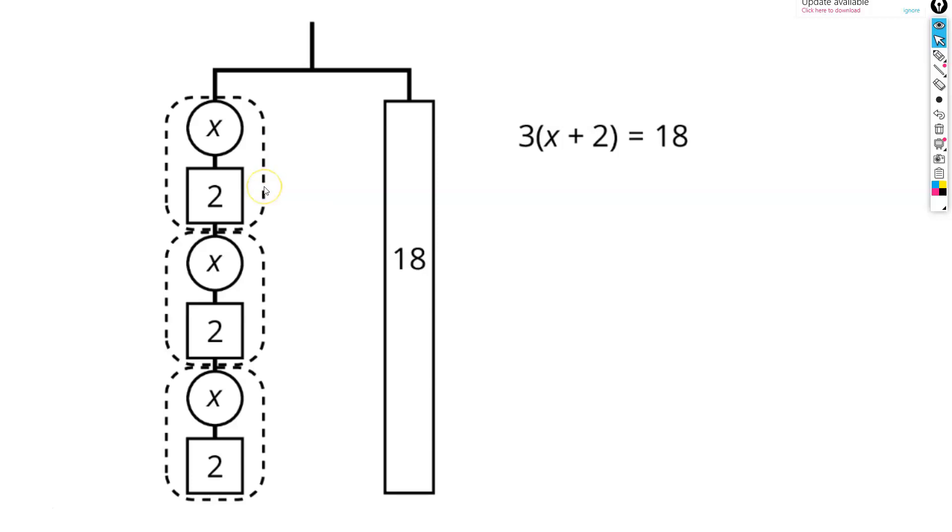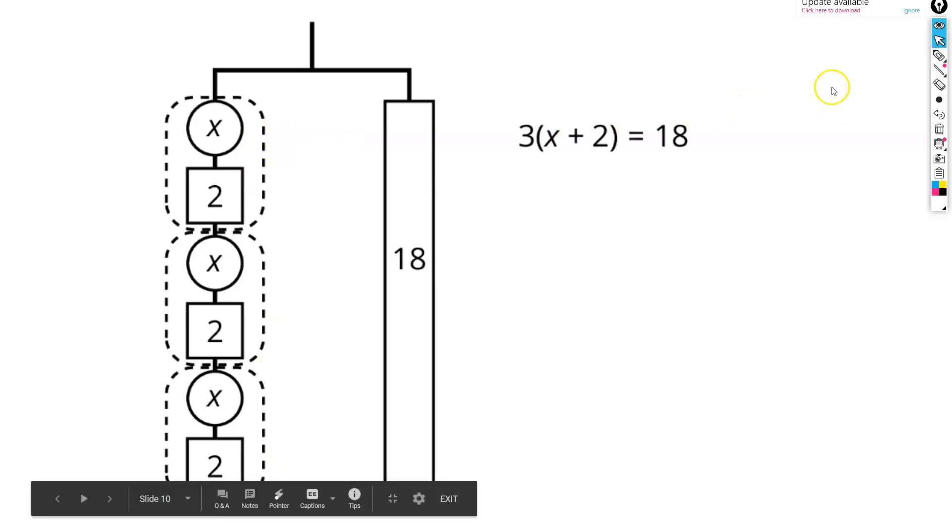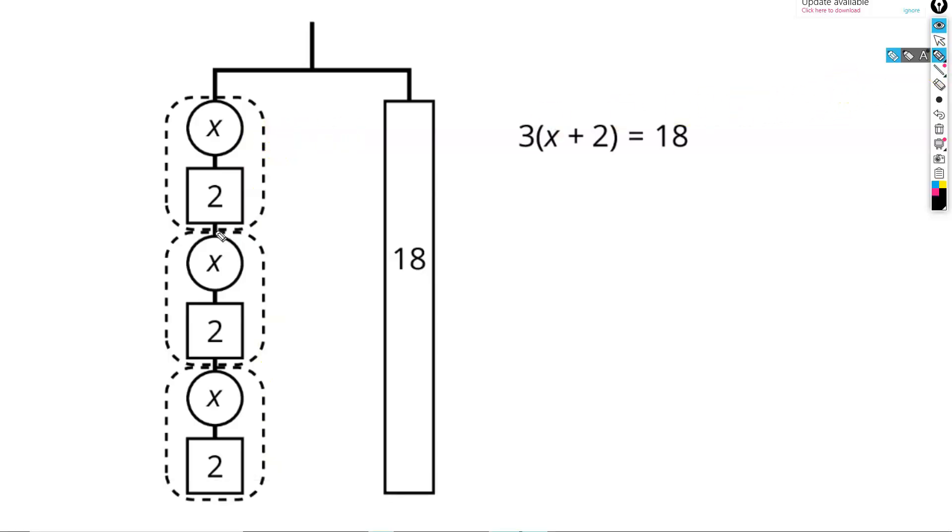One set of x plus 2 is going to be 1 third of the weight of our whole left side. And because we're finding 1 third of the left side of our hanger, we also need to find 1 third of the right side of our hanger. We can do this by dividing both sides of our equation by 3.